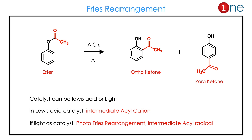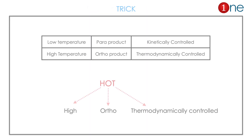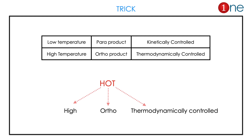What is Fries rearrangement? It is a conversion of phenolic ester into phenolic ketone. The rearrangement can occur at the ortho and para positions. The catalyst can be a Lewis acid or light. The intermediate is an acyl cation. If light is used as a catalyst, it is called photo-Fries rearrangement, and the intermediate is an acyl radical.